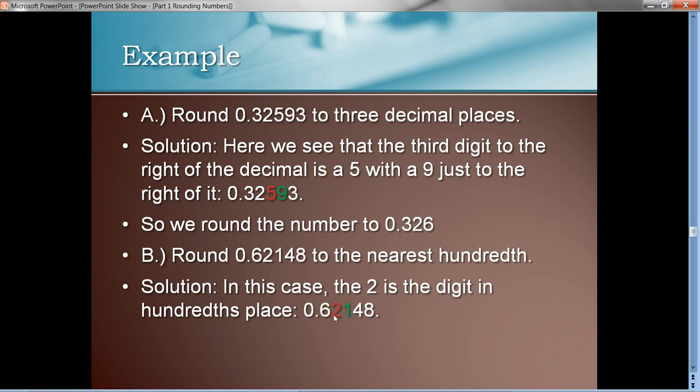The digit just to the right of it is a one. So, that means what? The place we're rounding to, we just want to leave that number the same, because the green number here is less than five. All right? So, rounded to two decimal places, that number is 0.62. All right. So, that's the first kind of rounding we want to do. We want to round to a certain number of decimal places.